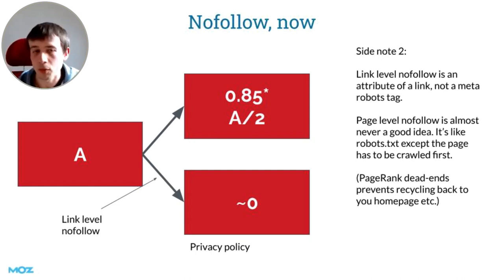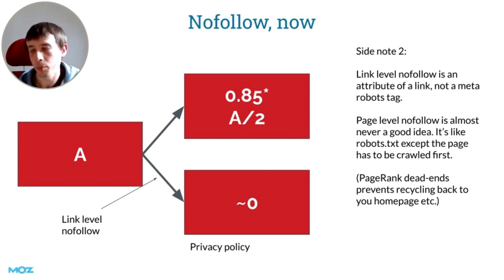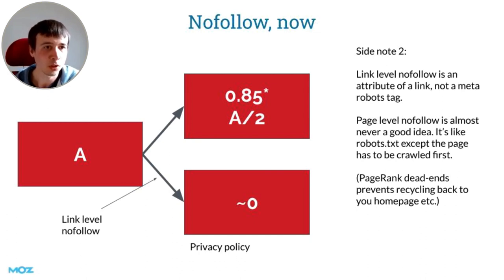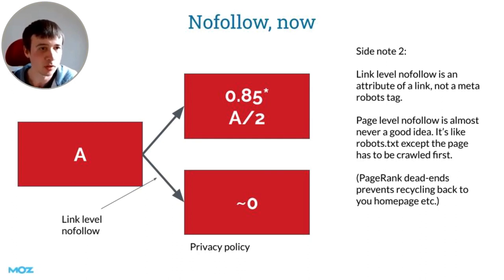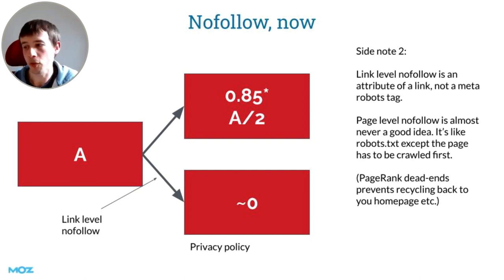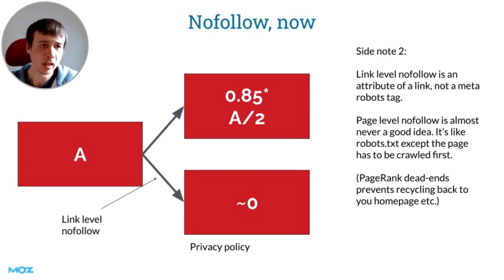There's also page-level nofollow, which means treating every single link on a page as nofollow — creating a PageRank dead end. This is a strange thing to do. Sometimes people use robots.txt, which does basically the same thing from a PageRank perspective, except there are other valid reasons to use robots.txt — like preventing Google from ever seeing a page or preventing a massive waste of the crawler's time so it spends more time crawling the rest of your site. Page-level nofollow creates that dead end, but also wastes Google's time crawling it anyway.